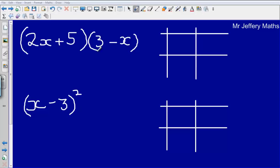We're going to do exactly the same thing as we did in the last video, whereby we put the terms that are in each of our brackets into a grid, very similar to long multiplication. So we're going to take 2x and plus 5, then we've got 3 and minus x.